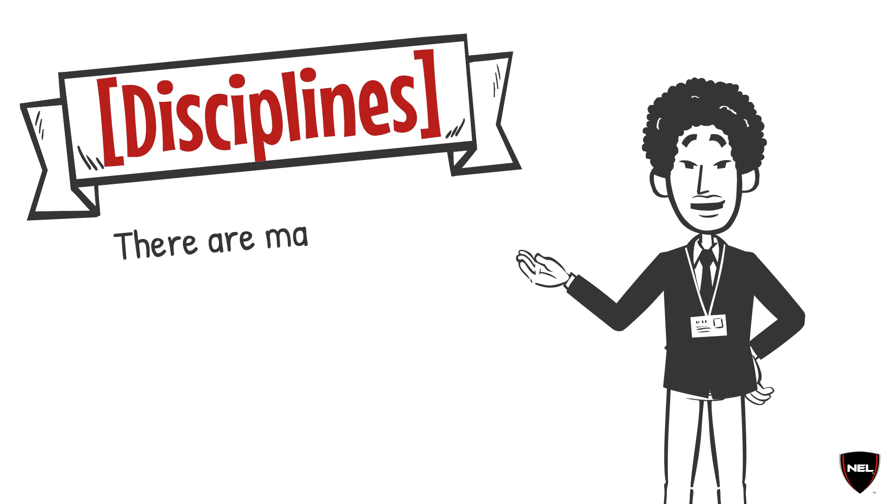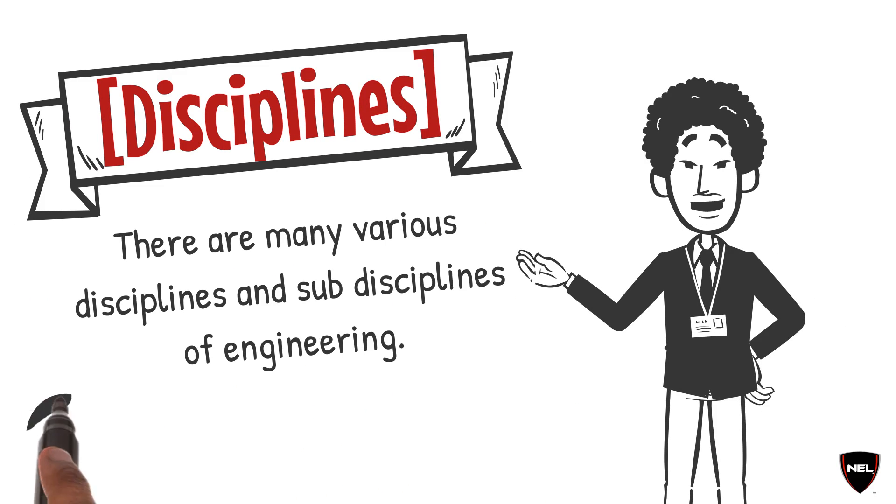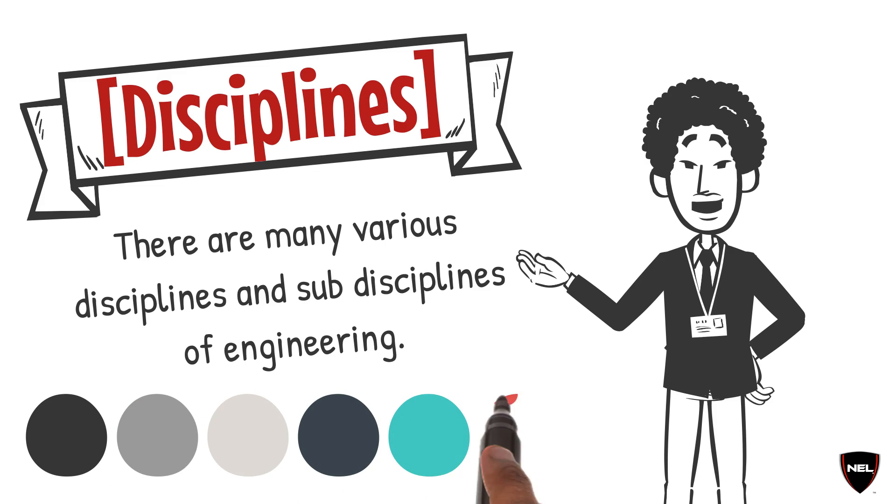There are many various disciplines and sub-disciplines of engineering. For the sake of this informational guide, we'll only be covering six of the major types of engineering fields.